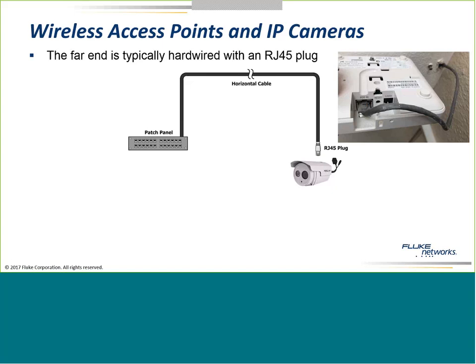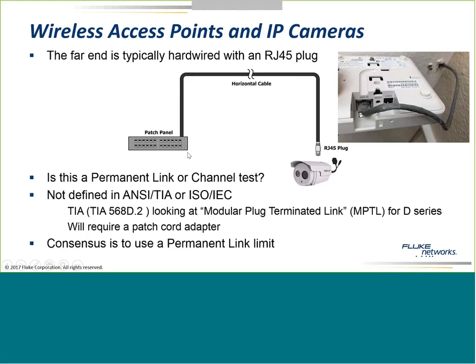If we're going to use this model where we have a jack on one end and a plug on the other, is this a permanent link or a channel test? We've got channel on one end and permanent link on the other. The consensus is we really want to test this to the permanent link limits — they're a little more stringent. And in the future, when we add a patch cord to the patch panel side, we won't need to retest.